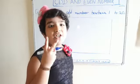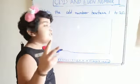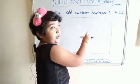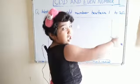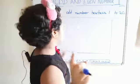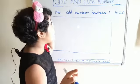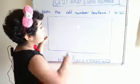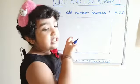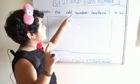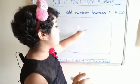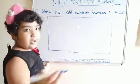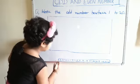अब हम करेंगे question 2. Our question 2 is: write the odd numbers between 1 to 20. इसका मतलब 1 to 20 के बीच में जितने भी numbers हैं उनमें से odd numbers को box में लिखना है. अब हम पहचान लेते हैं.